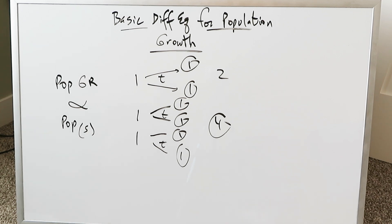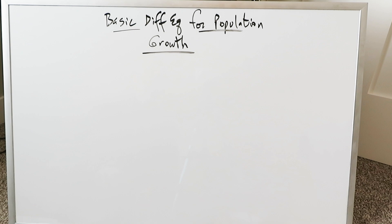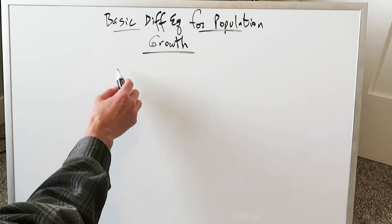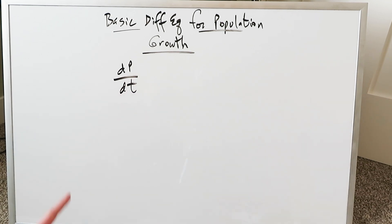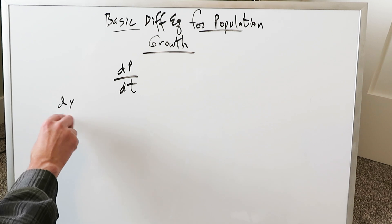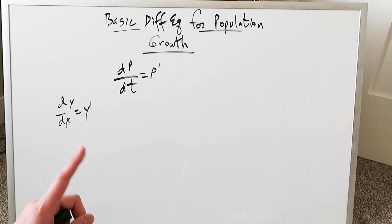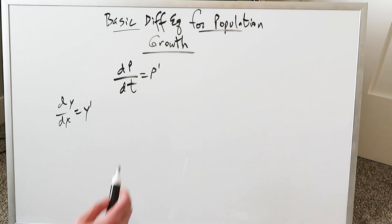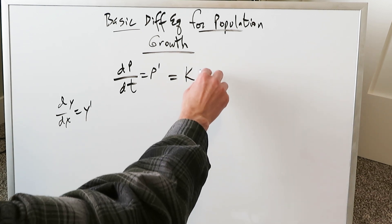Keep that in mind as we go through the rest of this video, because this educated assumption comes into play throughout. Now since we're talking about population and time, we don't need to use x and y — we can use p's and t's. Let the change in population over change in time be our derivative factor.